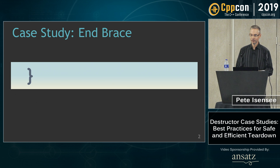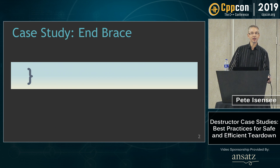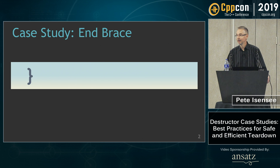The closing brace — my favorite line of code in C++. It's a very important line of code and one that is all too easy to overlook. Ask a C programmer what happens here, and the answer is nothing. Ask a new C++ programmer and the answer is nothing, or 'I don't know, it's the end of the scope.' And if you ask an experienced C++ programmer, the answer is anything.